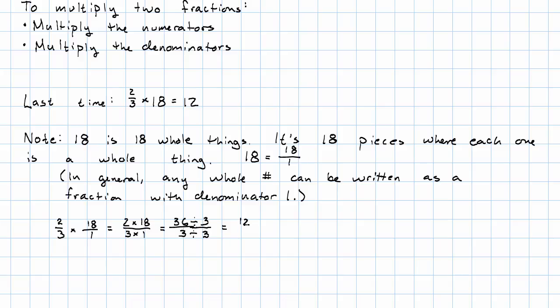36 divided by 3 is 12. 3 divided by 3 is 1. And so we get 12 whole things, that is 12. And we notice that this is, in fact, the same result that we saw before.